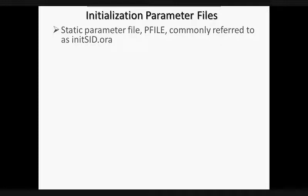Some parameters are dynamic, which means they can be modified while the instance is running. Changes to dynamic parameters are not reflected in the pfile. By default, the pfile is located in the $ORACLE_HOME/dbs directory on a Unix machine with the name init-sid.ora. A sample init.ora file is created by the universal installer during installation. This sample init.ora file can be used to create an instance-specific init-sid.ora.